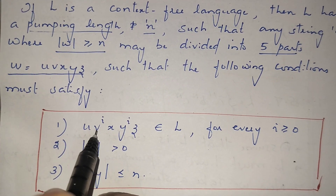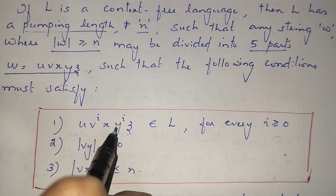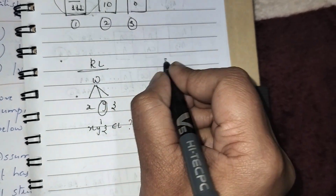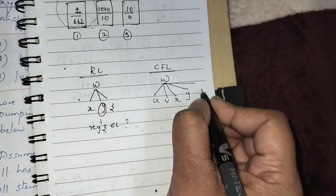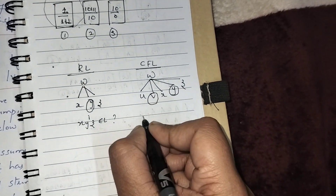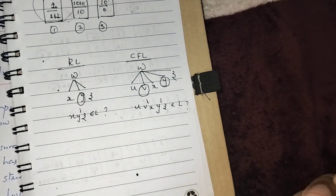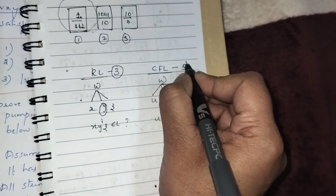These five parts must satisfy the condition: u v^i x y^i z belongs to L for every i greater than or equal to 0. We are pumping v and y only. In the case of regular language, the string is divided into three parts x, y, z and we pump y only — x y^i z belongs to L. In context-free language we divide into five parts u v x y z and pump both v and y: u v^i x y^i z.